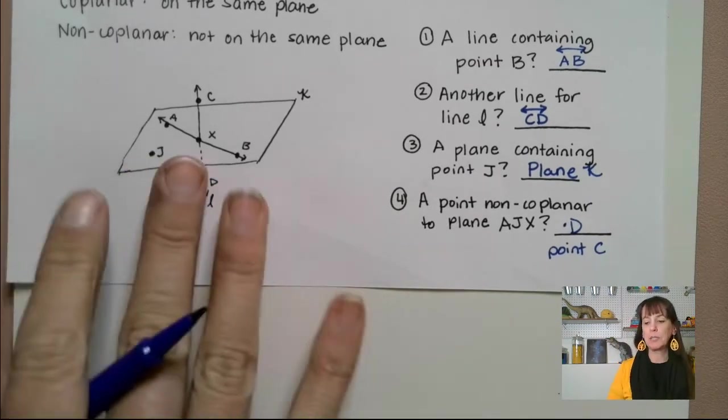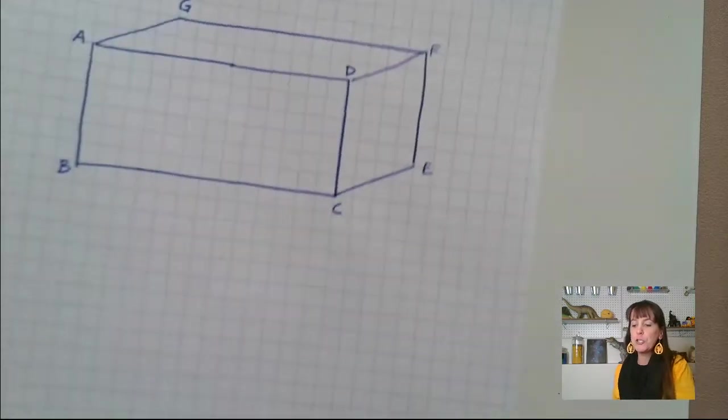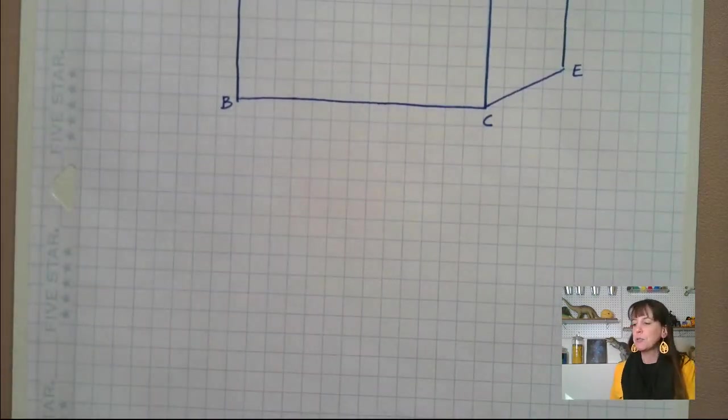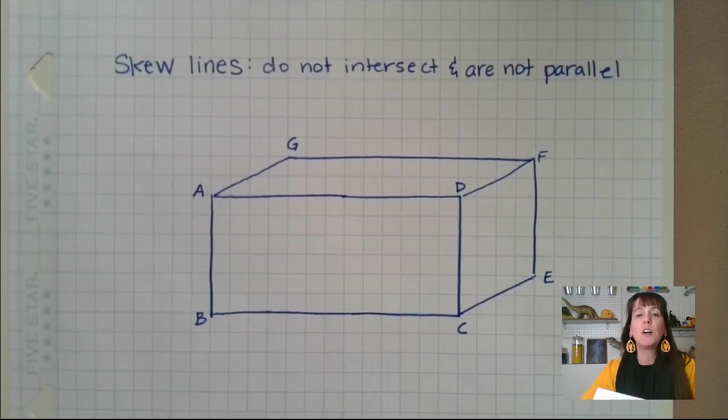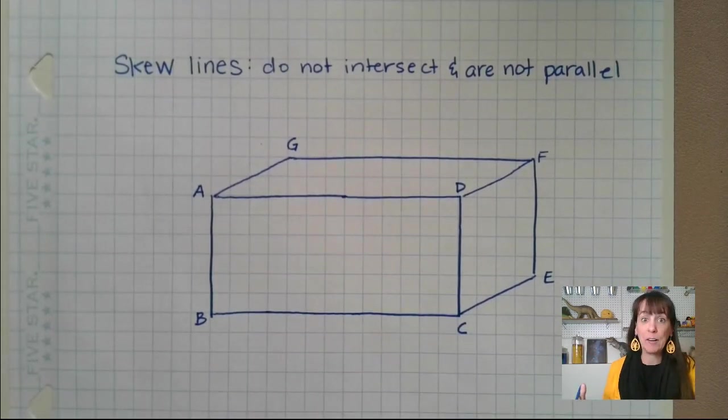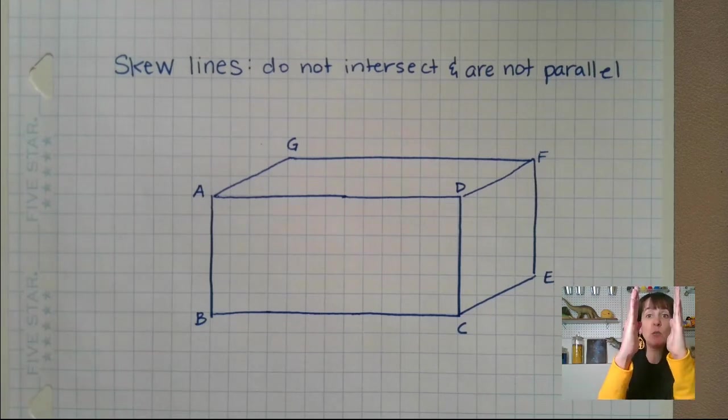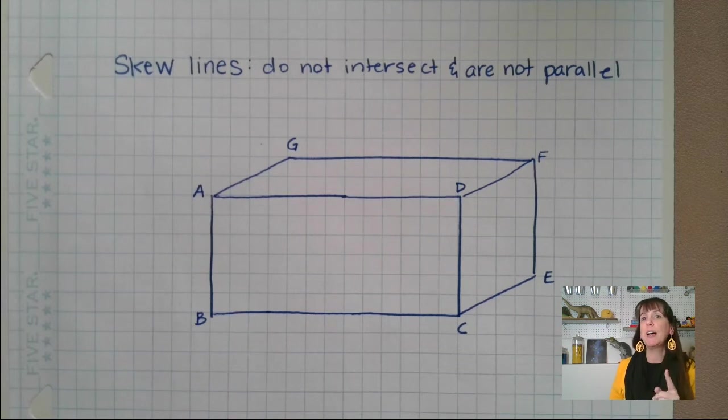Now, one more that's really important that we need to talk about are skew lines. So skew lines - and it will help if I move this. Skew lines are lines that don't intersect, and they're not parallel, right? Previously in algebra, we learned about lines that don't intersect, and those guys, they're parallel. They just never cross. Skew lines don't cross, but they are also not parallel.